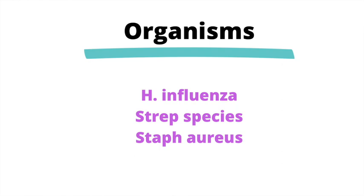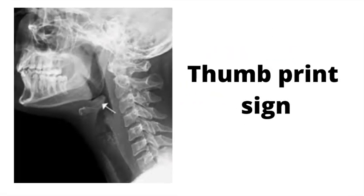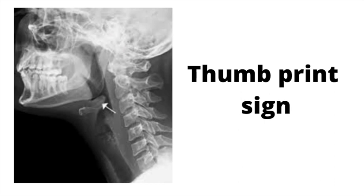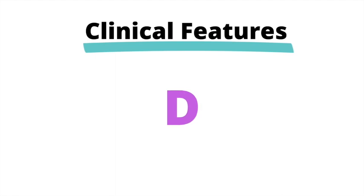Here we see the classic thumbprint sign seen in epiglottitis. Patients with epiglottitis have a supraglottic stenosis, which results in very classic clinical features. These clinical features can be remembered with an easy mnemonic — just remember the capital D. Kind of feels like Sesame Street here, but bear with me. Look at all these Ds.